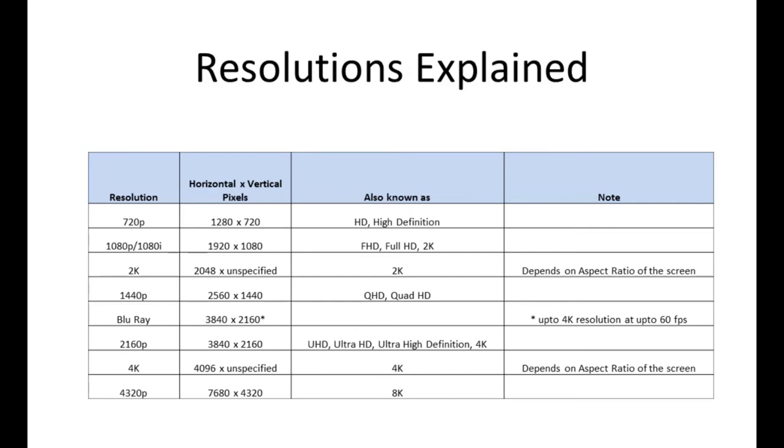Next we have 2160p, also known as Ultra HD or UHD video, which stands for 3840 pixels across versus 2160 pixels vertically. And the closest to UHD is technically 4K, which is 4096 pixels horizontally versus the same thing, unspecified pixels vertically, because again it depends on the aspect ratio of the screen.